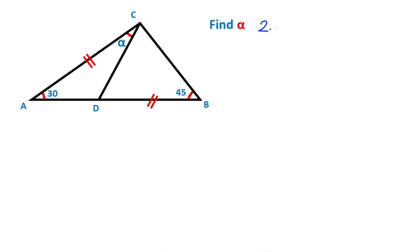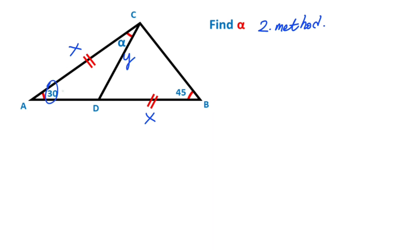So this was the first method. Now we will calculate the value of alpha using a second method. First step: let's call these equal sides X unit, and this side I'm going to represent with Y.